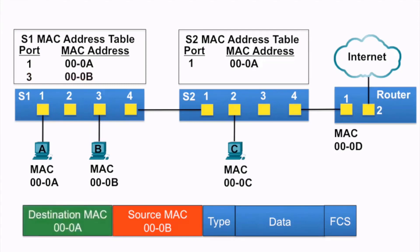Next, switch S1 examines the destination MAC address and notices that MAC address is in its MAC address table, so it sends it out just port 1.